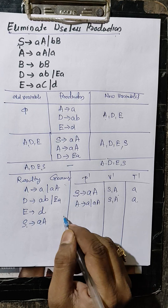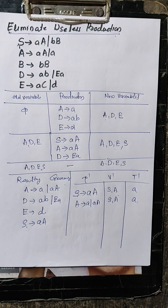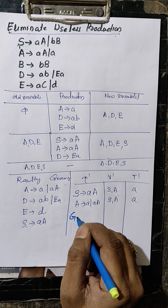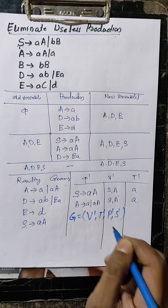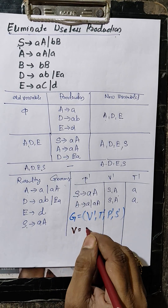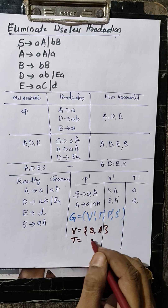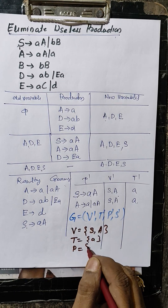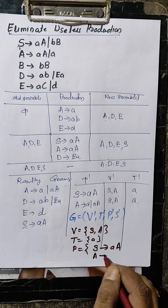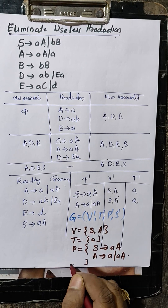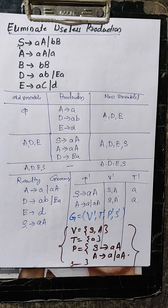Grammar is S produces AA and A produces AA or A. Resulting grammar G equals V dash, T dash, P dash, S dash. Within this, V equals variables S and A, and terminals T equals only A. Productions: S produces AA and A produces A or AA. Then S is the starting symbol. This is the grammar after eliminating useless production.